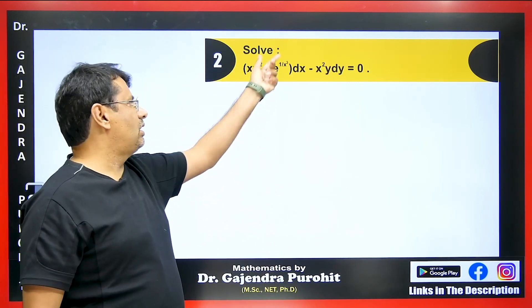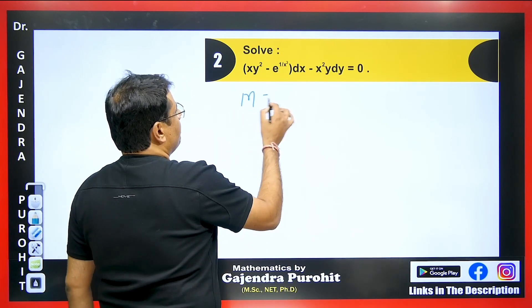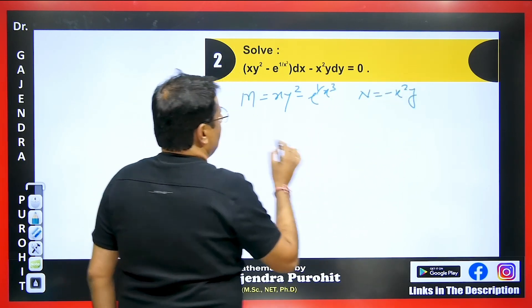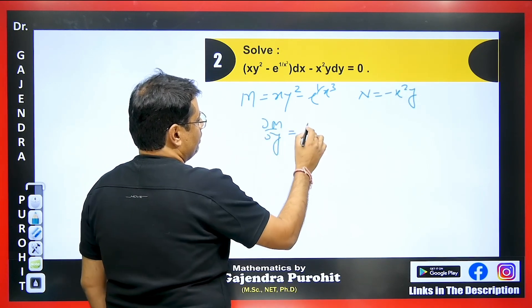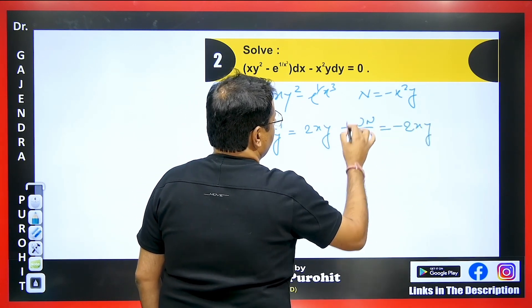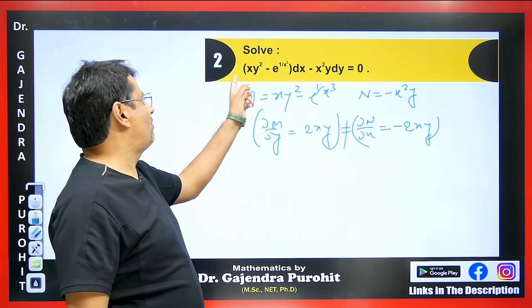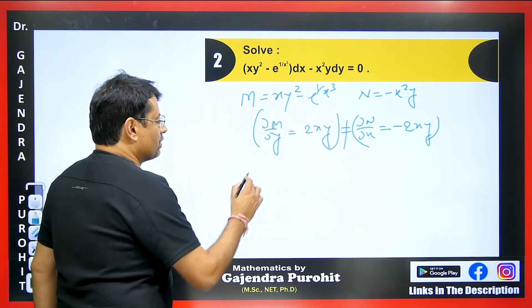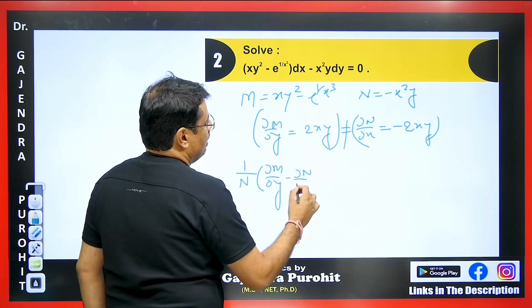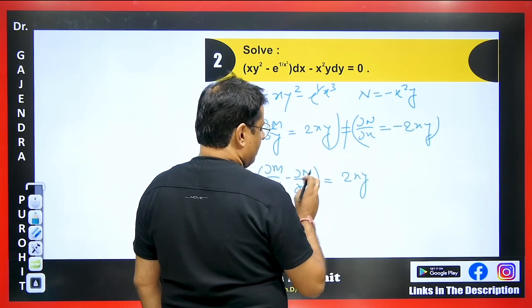Moving on to the next question: M = xy² − e^(1/x³) and N = −x²y. We check ∂M/∂y = 2xy and ∂N/∂x = −2xy — these are not equal, so the equation is not exact. It is not homogeneous, and we cannot take x and y common. Notice N = −x²y is the smaller term, so we will use the formula (∂M/∂y − ∂N/∂x)/N.